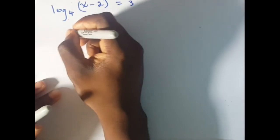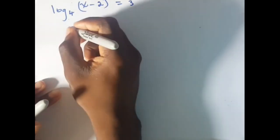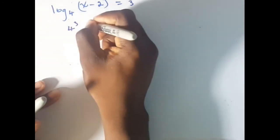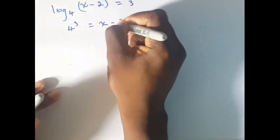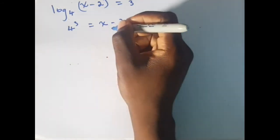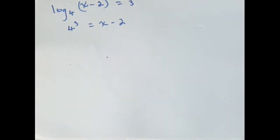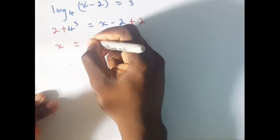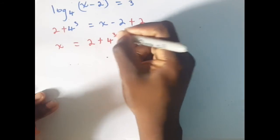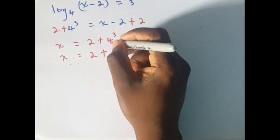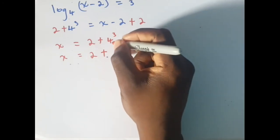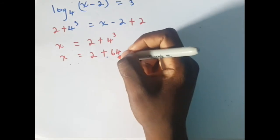Say I have log base 4 of x minus 2 equals 3. The same process applies: I raise the base to this power, so in exponential form it is 4 cubed equals x minus 2. This is straightforward — I solve for x by adding 2 to both sides, so x equals 4 cubed plus 2.